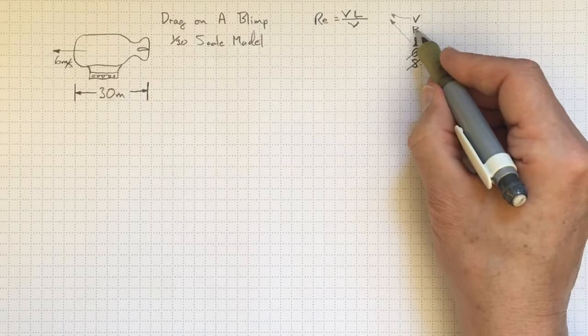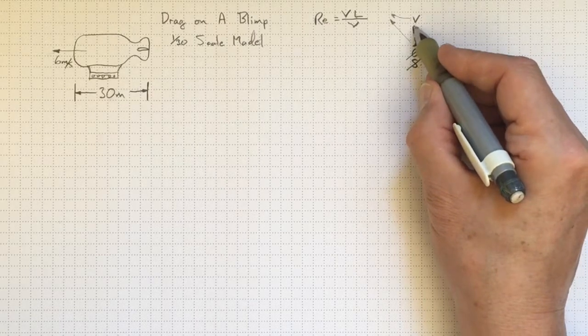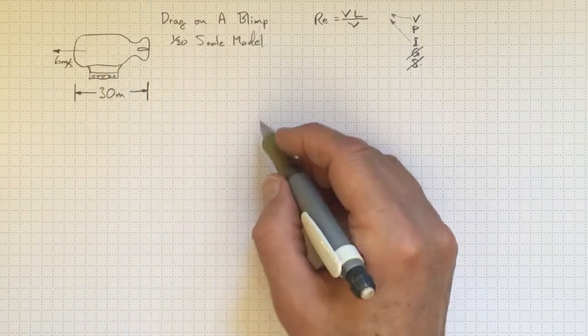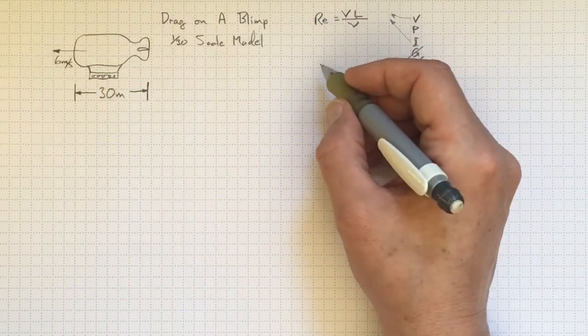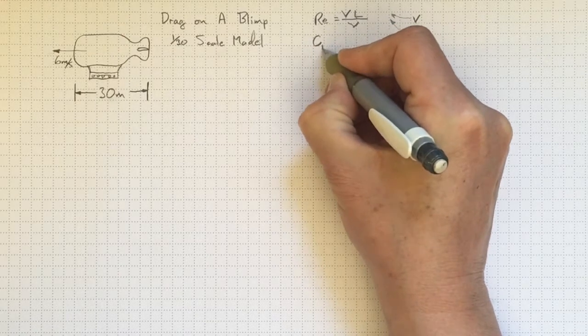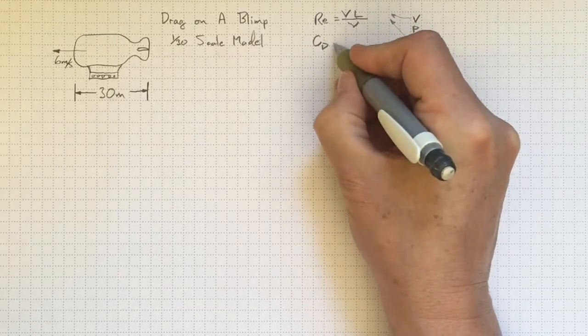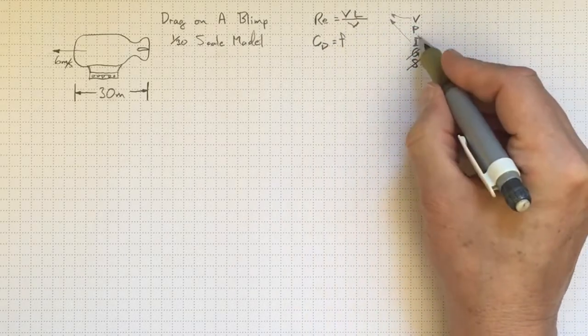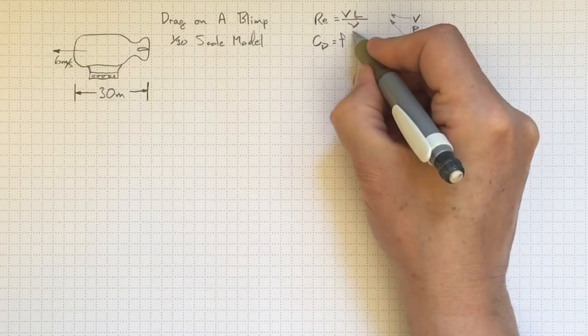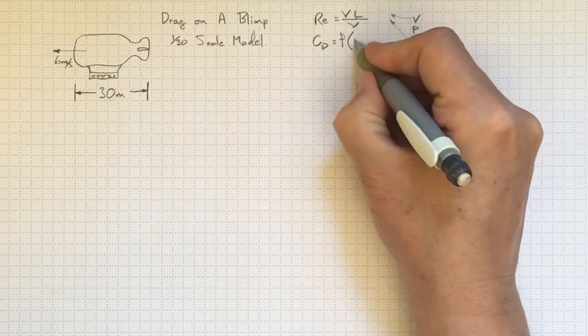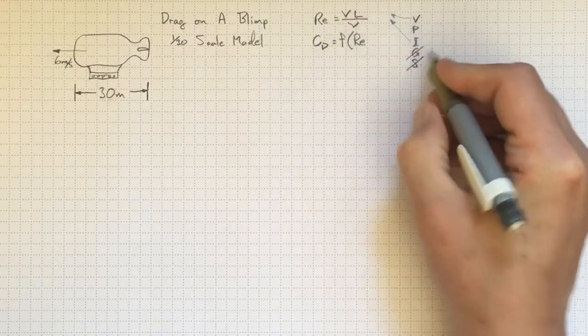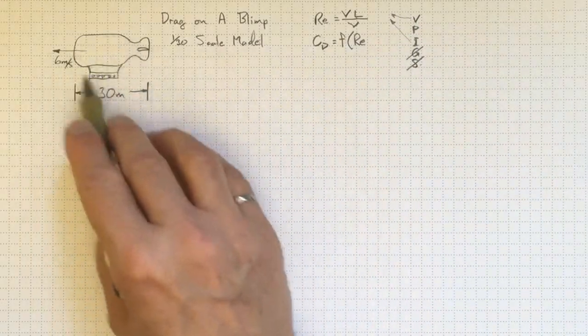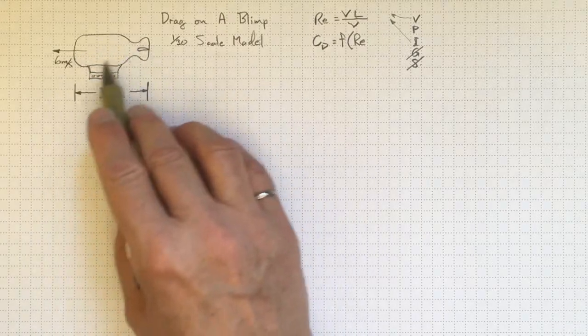Also, we're going to have the drag coefficient that's going to include all of the pressure forces and some of the viscous effects of the shear stress along the sides. So we'll have a drag coefficient, usually written C_D, and it'll be some function of, if none of the rest of these are important, it'll definitely depend on the Reynolds number, and it'll depend on any other dimensionless groups that are significant in defining this blimp.